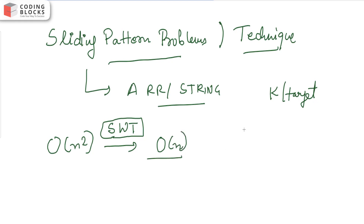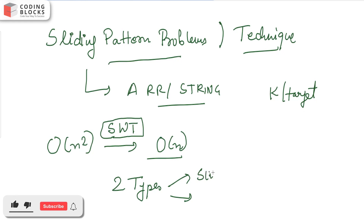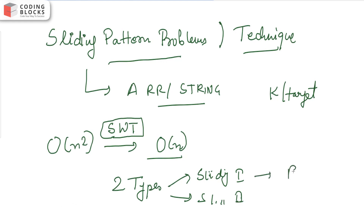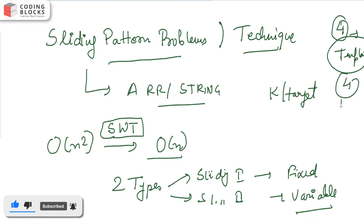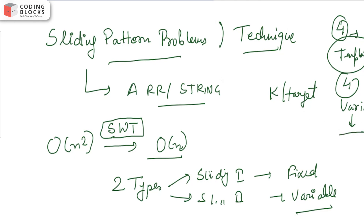There are basically two types of sliding window problems: sliding window one, which is a fixed window, and sliding window two, which is a variable window. We will look at the fixed window first and solve four different problems using the same template. Then we'll cover four variable window problems, and you'll be well-equipped to solve all sliding window problems.